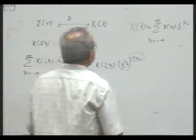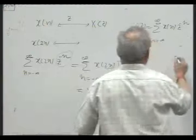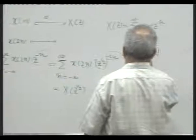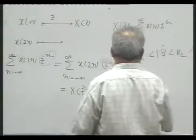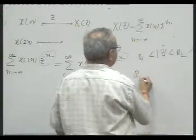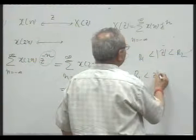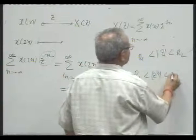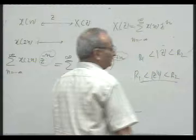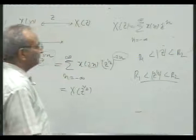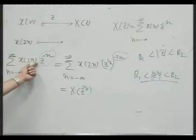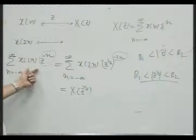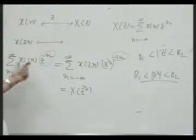Now if the ROC of X(z) was some region, then the ROC in this case gets modified. So you can use this idea to find out the z-transform directly. You can do it otherwise also — you can go for a substitution, letting 2n equal n prime, and then you get the result.